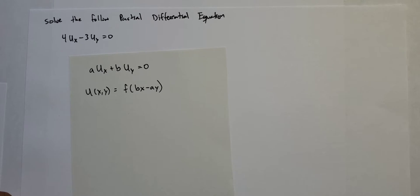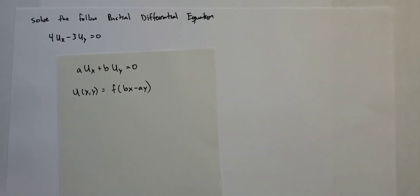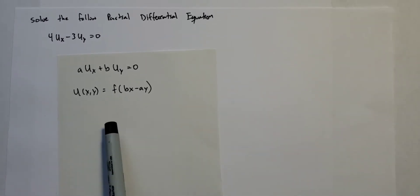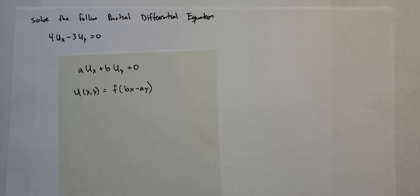Only until they give you auxiliary conditions — like initial conditions, boundary conditions, or some type of condition — can you find the specific equation that pertains. So for here, we're going to find just general solutions, and you'll see what I mean by that.